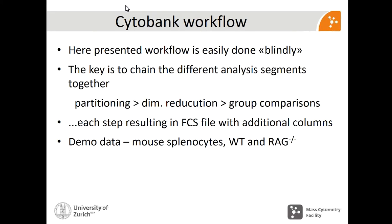What I'm going to present here is a workflow that can easily be done blindly — important for us because we cannot be infinitely familiar with all the hypotheses of our researchers. The key is to chain these different analysis segments together, because sometimes some of these tools will be meant as standalone tools, but you really exploit their full power if you chain them smartly. Each of those steps would result in an FCS file with an additional column. I'm going to be presenting some demo data: mouse splenocytes with a 27-dimensional panel, with two genotypes — wild type and a RAG knockout mouse. A RAG knockout mouse will have T and B cells missing, which is a fairly big difference but serves a good purpose.